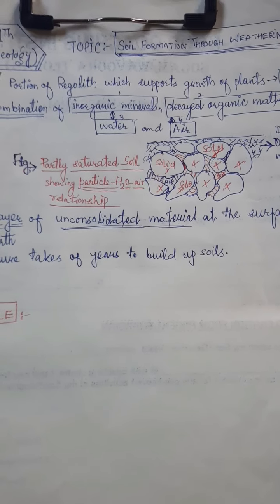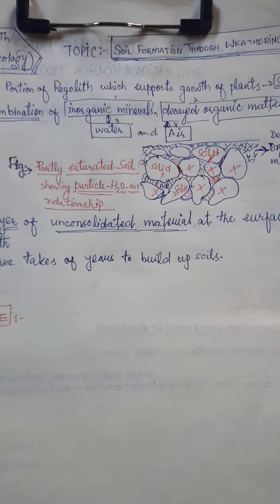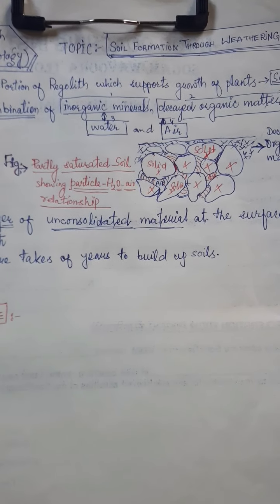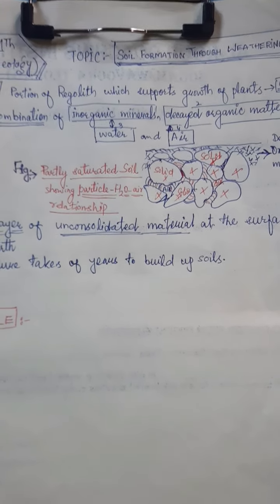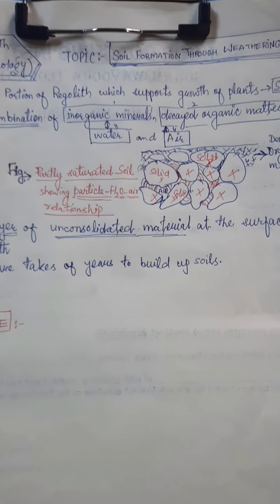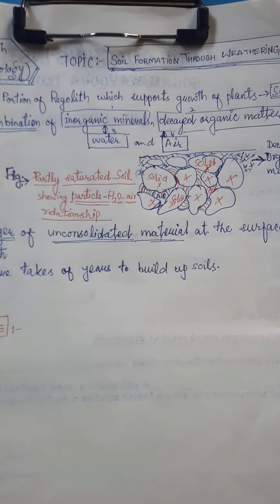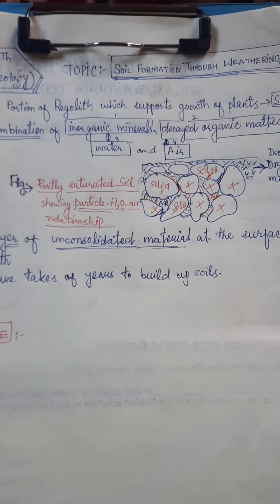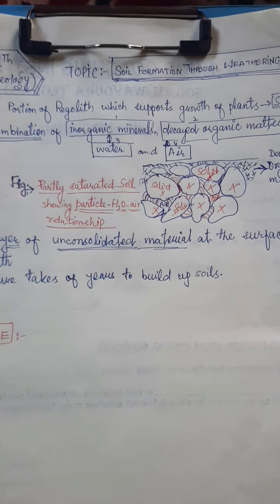So soil is actually a combination of various constituents. It is a heterogeneous mixture, composed partly of inorganic minerals, mineral grains, in the form of smaller bits of rock fragments and mineral fragments.